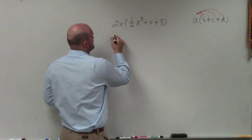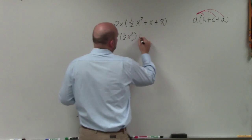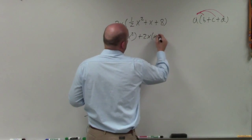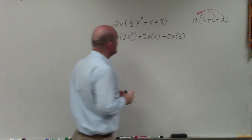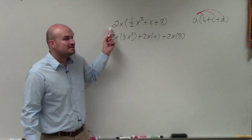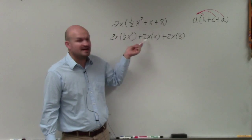So basically this is 2x times 1 half x squared plus 2x times x plus 2x times 8. Notice how I used plus because this number is positive. If this number was negative, I would have said negative 2x.